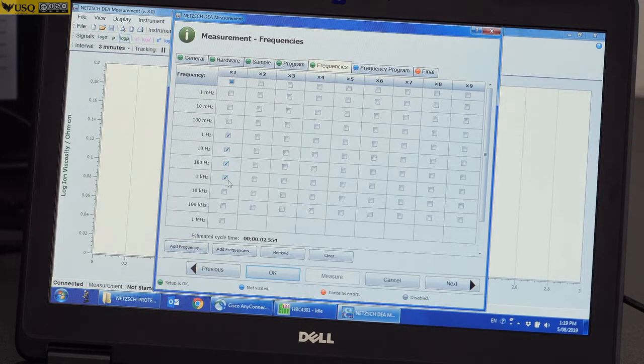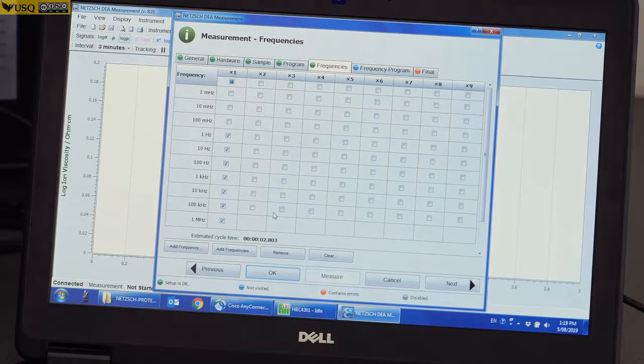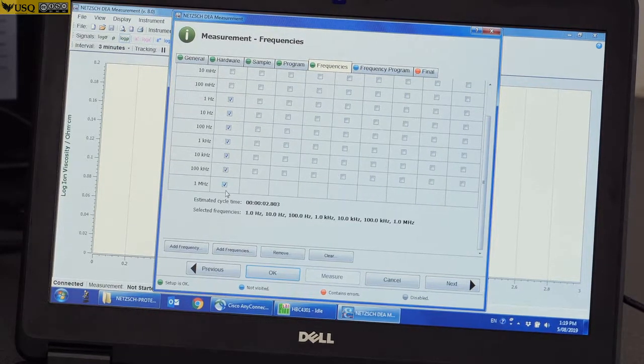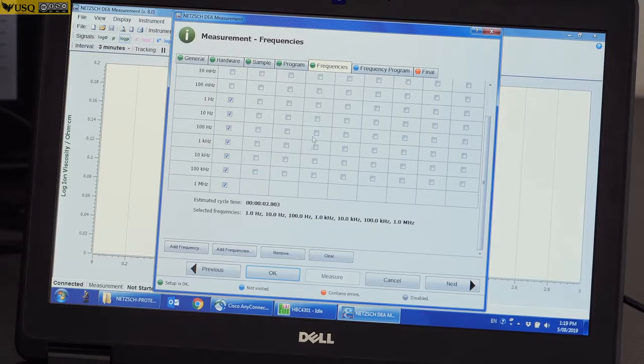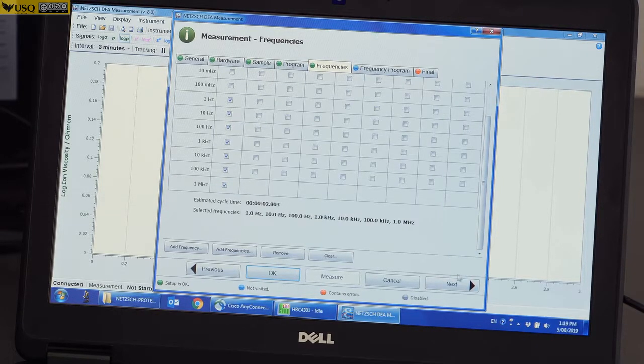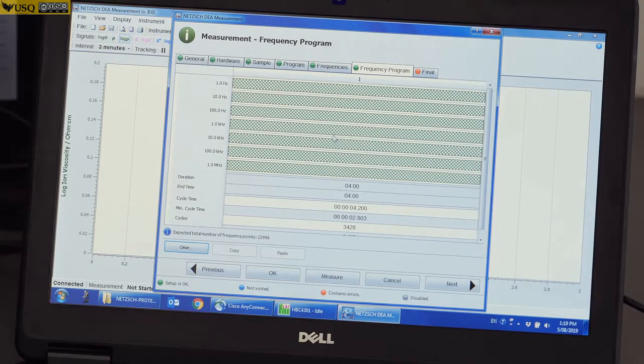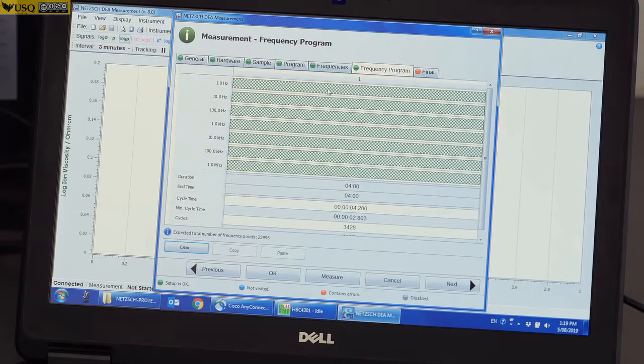1 kilo, 10, 100, up to 1 megahertz. I'll usually choose these few frequencies just for a start. Next, after I choose a frequency, I'll go to Next.